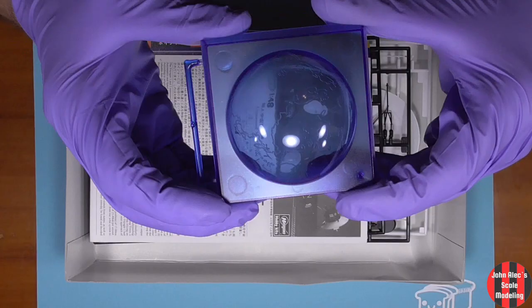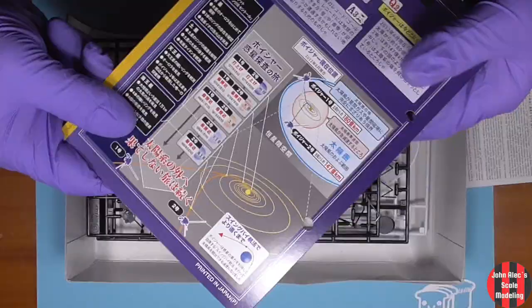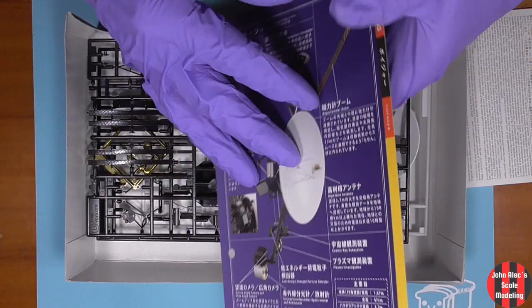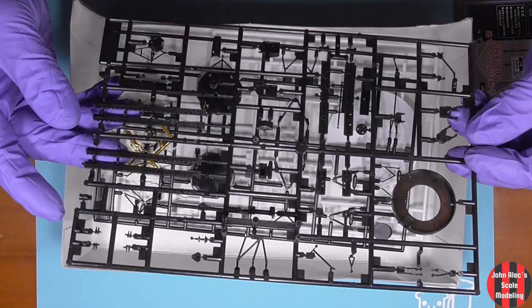In the box, you get a clear blue base with an earth etched in. The instructions. The information card, all in Japanese, but there's an app tool for that. Two black sprues, and a white sprue.